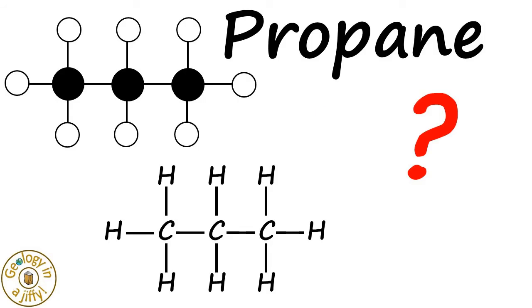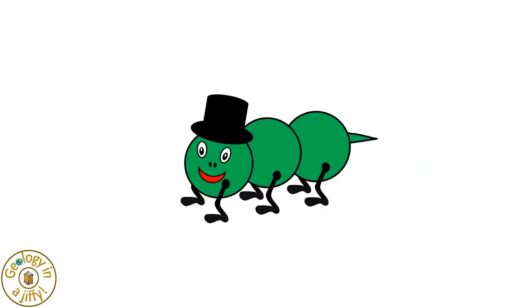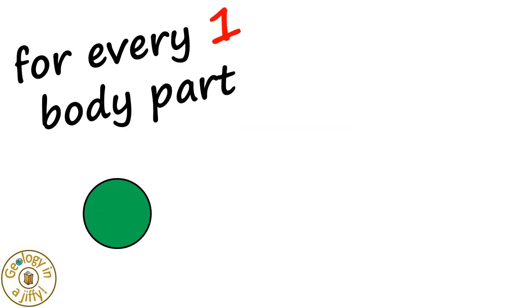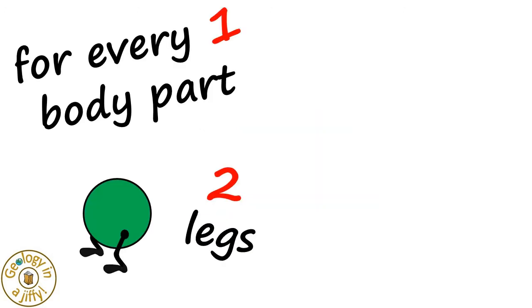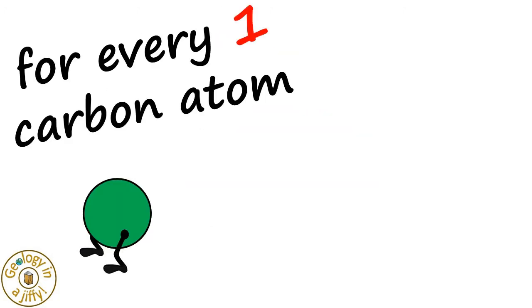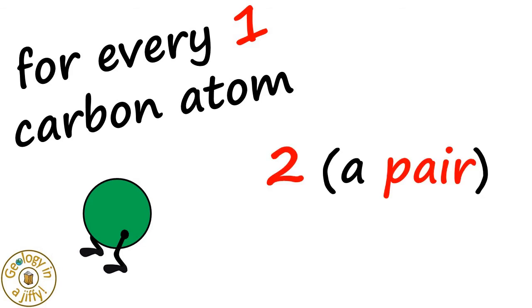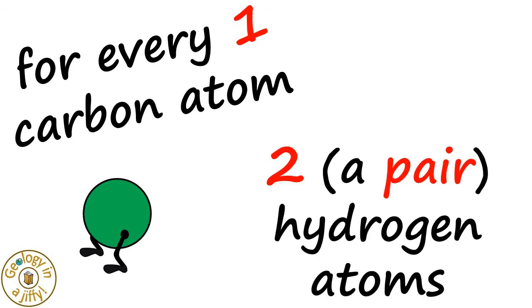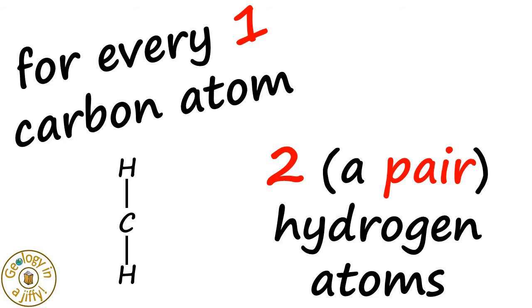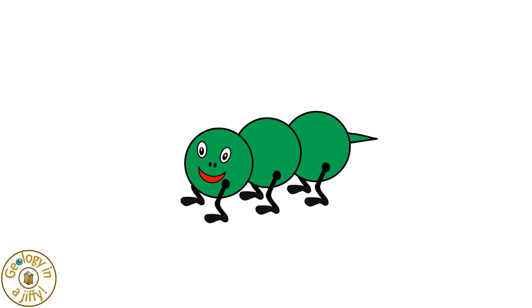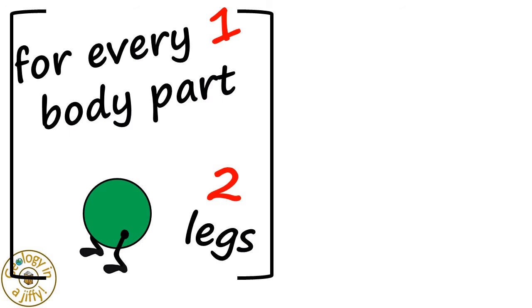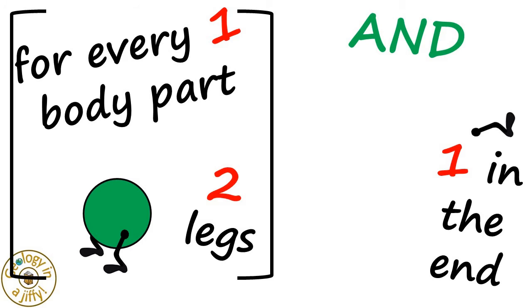Let's use our caterpillar to work out the formula for propane. Look at our caterpillar — let's remove the hat. We can see that for every one body part, there are two legs. So for every one carbon atom, there are two — a pair — of hydrogen atoms. And because this is our weird caterpillar, we swap its tail for a leg and add another leg in its head. So for every one body part there are two legs, and one leg at the end and one leg at the head.